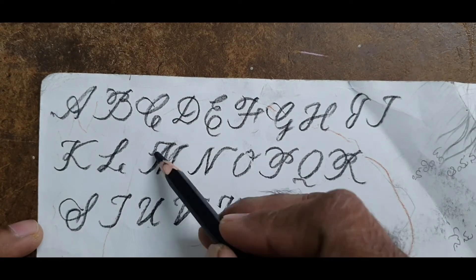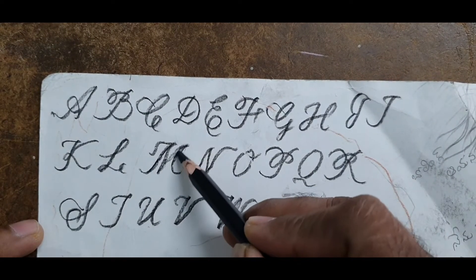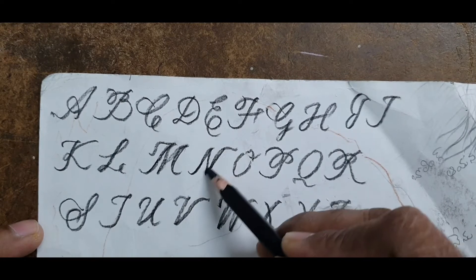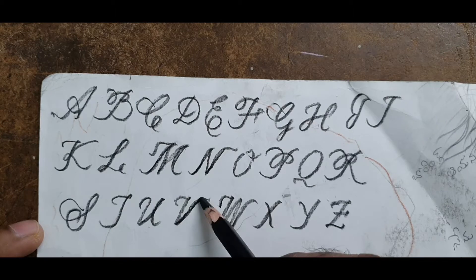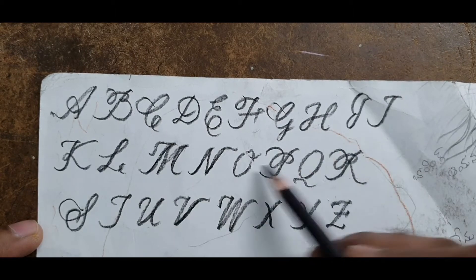If you closely observe: 1, 2, 3, 4, 5, 6, all these vertical lines are parallel to each other in each and every single letter.